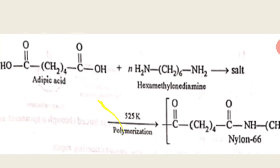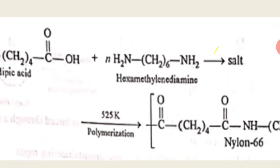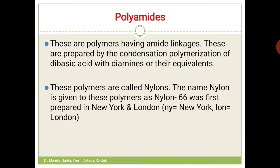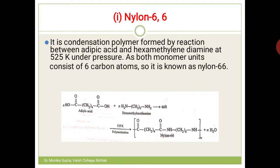The second monomer unit is hexamethylene diamine: NH₂-(CH₂)₆-NH₂, which also has 6 carbon atoms. Since both monomer units have 6 carbon atoms each, this is why we call it nylon 6-6.